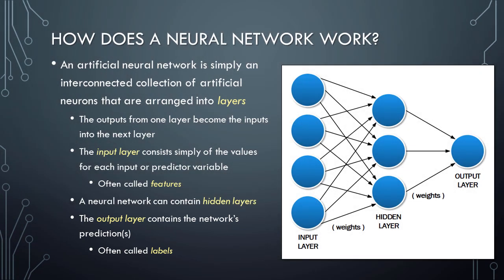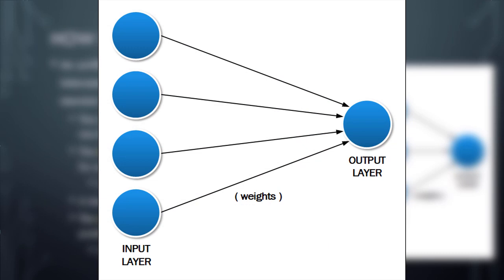Neural networks are not actually as difficult to understand as many people think. We take input values, multiply them by weights, run the results through an activation function, and this yields output values that are then multiplied by more weights and run through the activation function in the next layer. This process repeats until we reach the output layer. Interestingly, a neural network with no hidden layers and just one node in the output layer is conceptually identical to a standard linear regression model, since predictions are made simply by multiplying each input by a weight and summing the results.